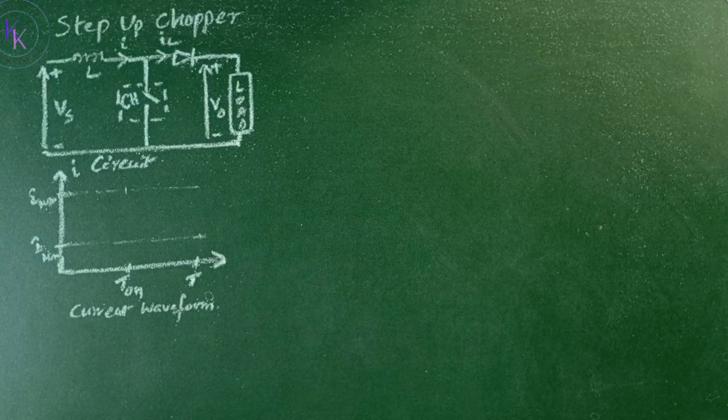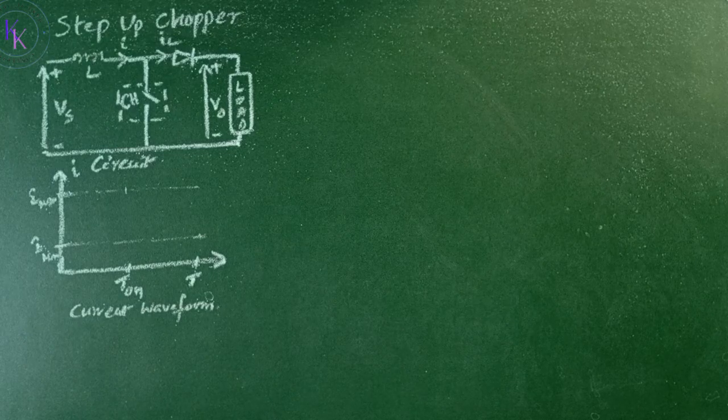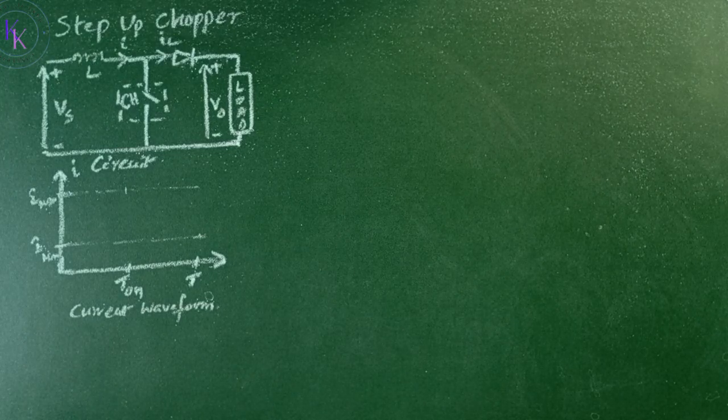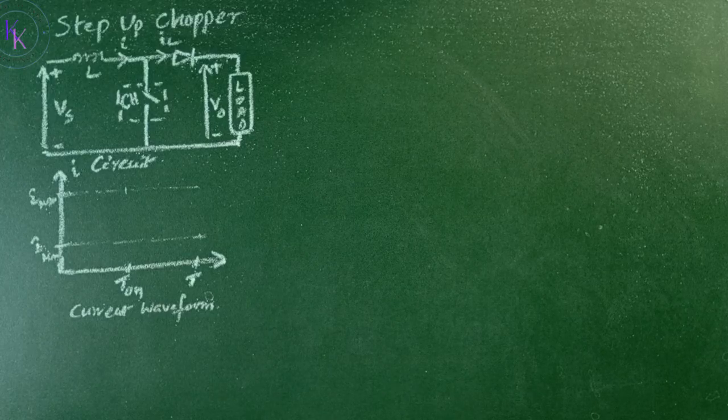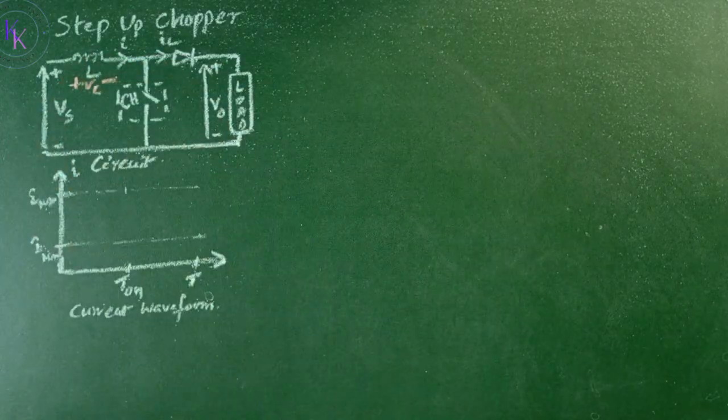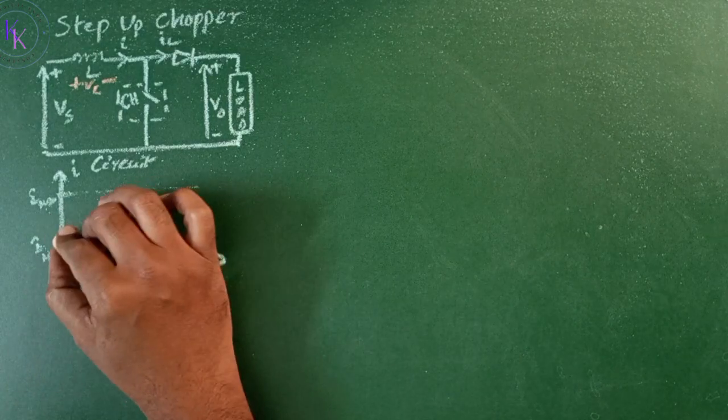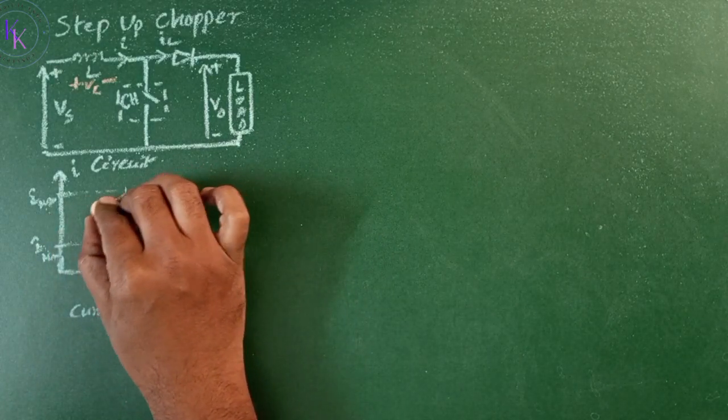During the turn-on period, when the chopper is closed, the load voltage equals zero. But the inductor voltage VL equals Vs, where the inductor stores energy and the current gradually increases from minimum value to maximum value.